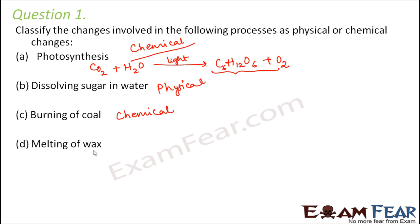Melting of wax is a physical change. Why? Because in this case, the chemical composition remains the same — wax still remains wax, it is just the state that changes. Initially it was solid, and when it starts melting it becomes semi-solid. It is also a reversible change, so it is a physical change.